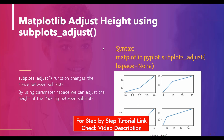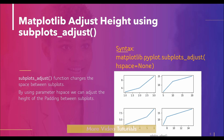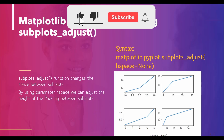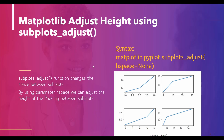Now we will see the next method for adjusting the height of the subplot. Using the subplots_adjust function, we can adjust the height — this function changes the space between subplots, and specifically for changing the height we pass the hspace parameter to it. Let me show you an example.